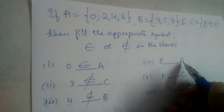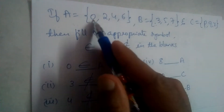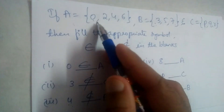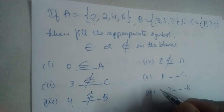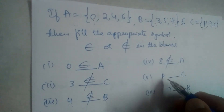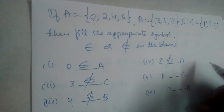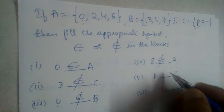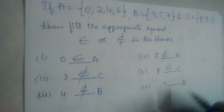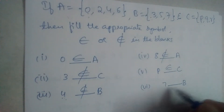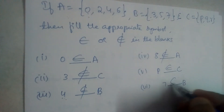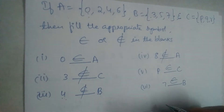Now, does 8 belong to A? A is {0, 2, 4, 6}, so 8 does not belong to A. Next, p belongs to C — yes, p belongs to C. And finally, does 7 belong to B? Yes, 7 belongs to B.